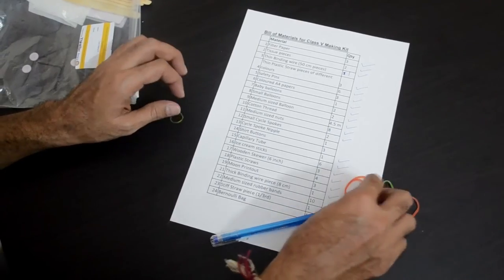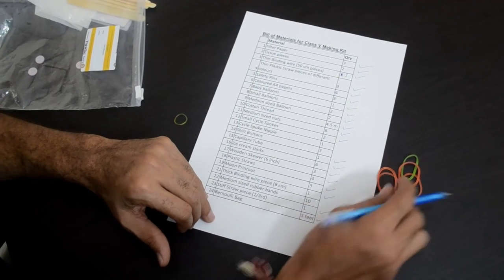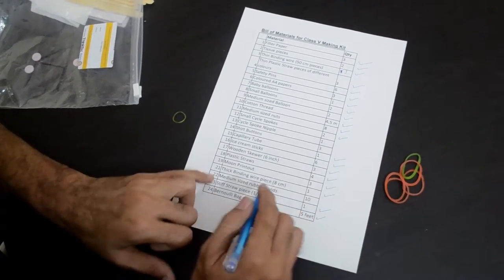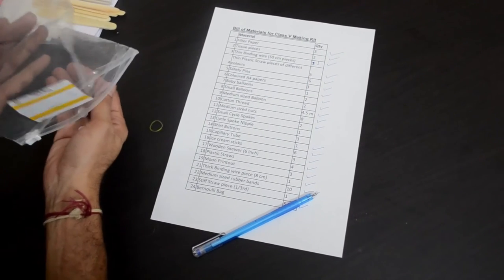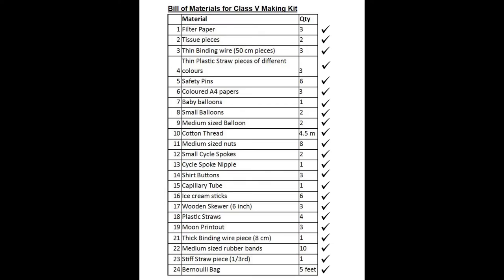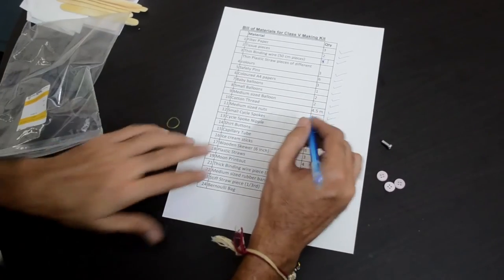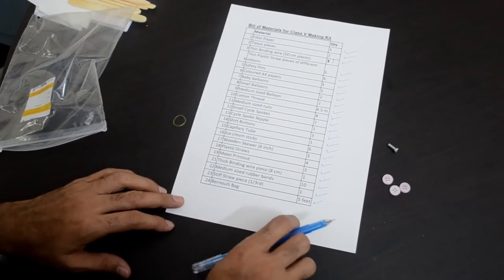You will also find around 5 to 6 rubber bands which are bigger in size. That's item number 22 in our list, medium sized rubber bands. You will also find these shirt buttons which you will need for the paper fuse activity. That is 3 shirt buttons. Cycle spoke nipple we just talked about, we forgot to tick at that time. This is the cycle spoke nipple, that's item number 13.